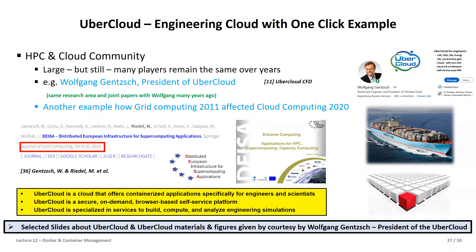Wolfgang developed this as president of UberCloud, finding a niche market growing out of grid computing — because many DAISA applications were computational fluid dynamics problems using specific libraries for specific engineering and science purposes. I contacted Wolfgang, I've known him for a long time, and we may work with UberCloud more. Some slides came from him, which I've marked. It's really a container tuned to the needs of scientists and engineers, and it's not only about installing packages — it also supports the build, compute, and analyze process required for science and engineering.